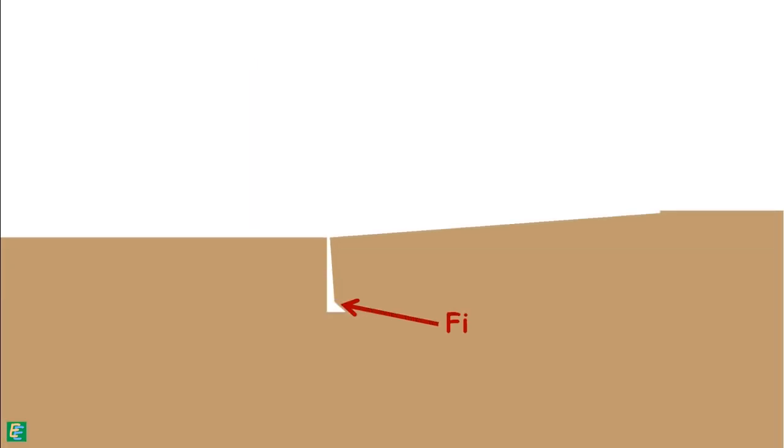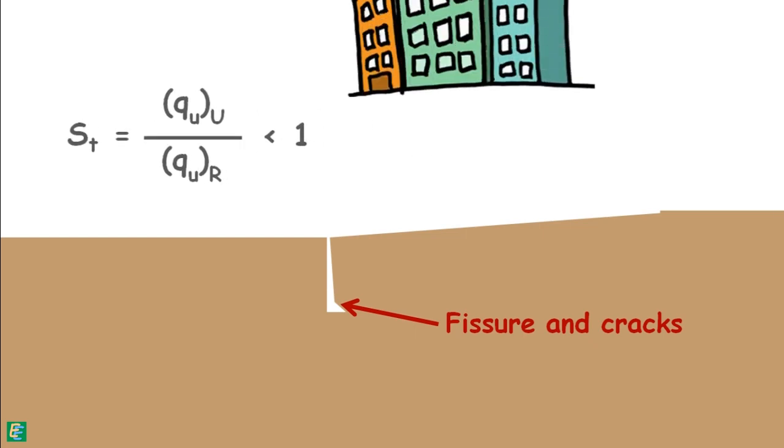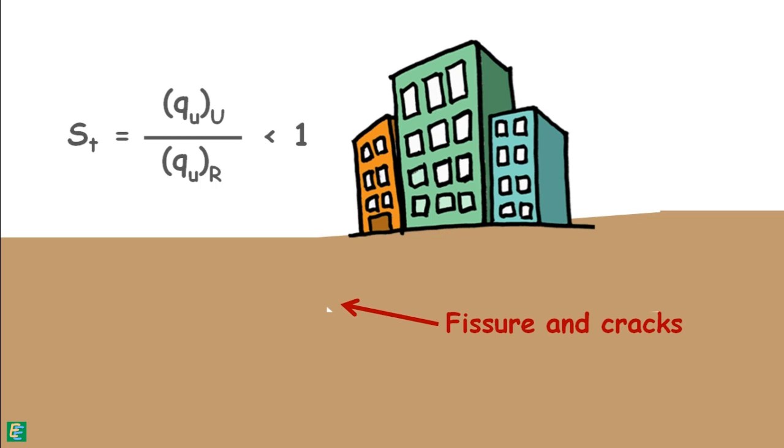But if stiff soils have fissures or cracks, they may sometimes exhibit a sensitivity value of less than 1, because these cracks present in undisturbed soil may be removed upon remolding. Hence their strength will increase after remolding.